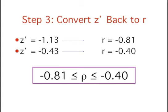Therefore, the population correlation, or rho, is likely to be between negative 0.81 and negative 0.40. The 95% confidence interval is shown in the purple box.